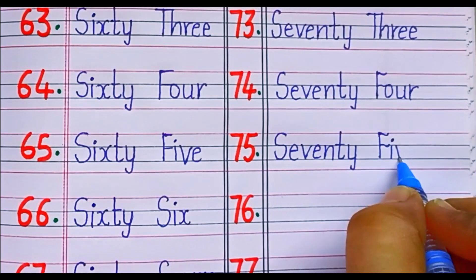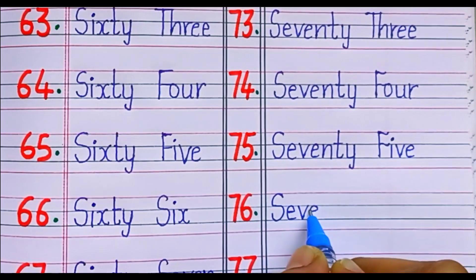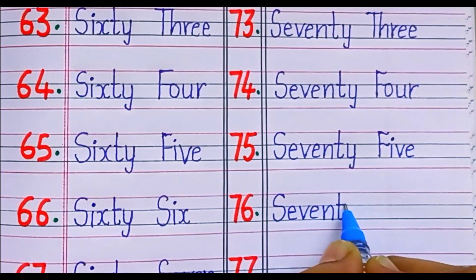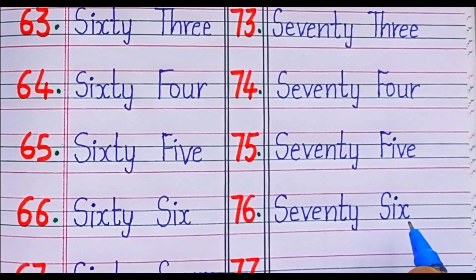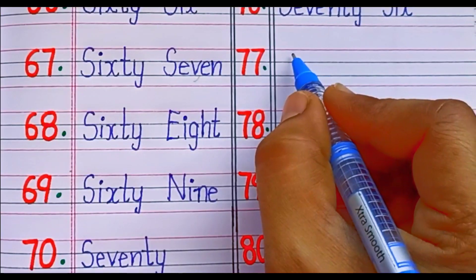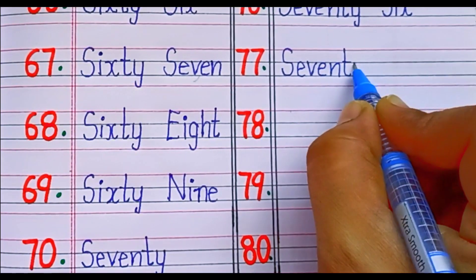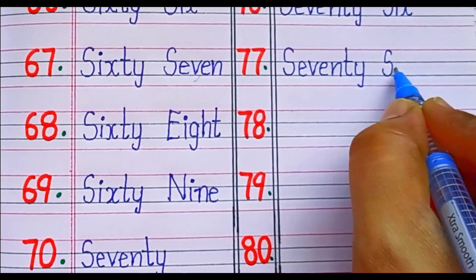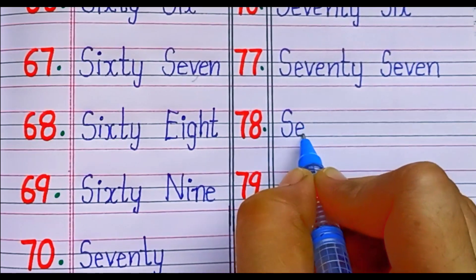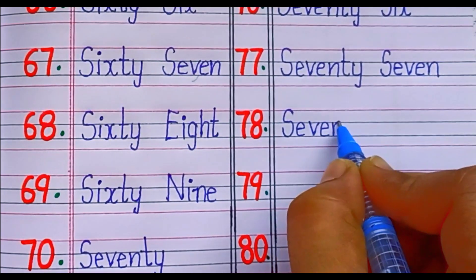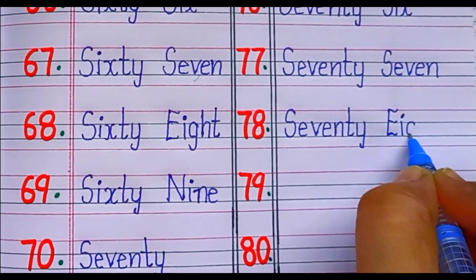SEVENTY-SIX: SEVENTY 70, SIX 6, 76. SEVENTY-SEVEN: SEVENTY 70, SEVEN 7, 77. SEVENTY-EIGHT: SEVENTY 70, EIGHT 8, 78.